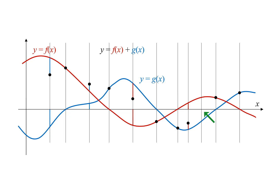Here is a value of x where g of x is below the x-axis by the same amount that f of x is above the x-axis. This makes the total value of f of x plus g of x equal to zero, giving us another point on our graph. Here is a value of x where f of x and g of x are the same height — when we add them, we get double that height.